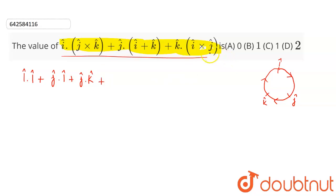Plus the next term: k cap dot i cap cross j cap. Since i cap cross j cap is k cap, this becomes k cap dot k cap.